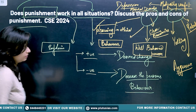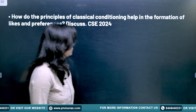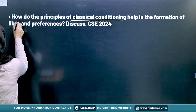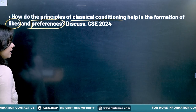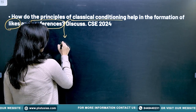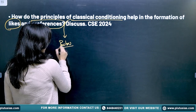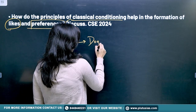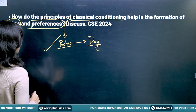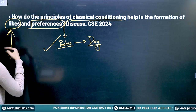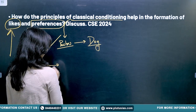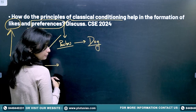The next question says: how do the principles of classical conditioning help in the formation of likes and preferences? As I told you in the first question, you start with the definition of classical conditioning — what Pavlov said and what was the experiment with the dog. This serves your definition. Then they ask how you form your likes and preferences. For example, the market has Coca-Cola and Pepsi.